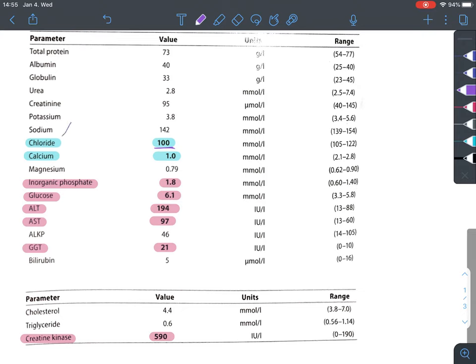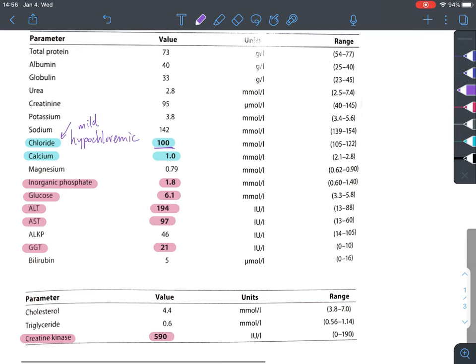Starting with chloride, we can see it's below the range, meaning our patient is hypochloremic. But it's not incredibly severe, so it's mild hypochloremia.